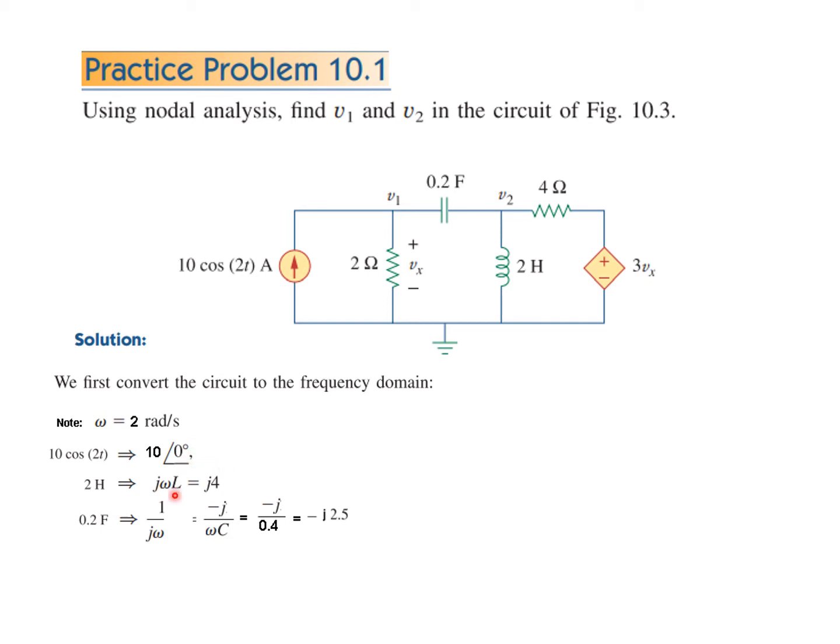2H will be j omega L so j into 2 is for omega and 2 for L so it will be j4 and the capacitor 0.2 farad will be written as 1 over j omega C or we can write best is that we write minus j divided by omega C and putting in the value it will be minus j divided by 0.4 which can also be written as minus j 2.5 ohms.